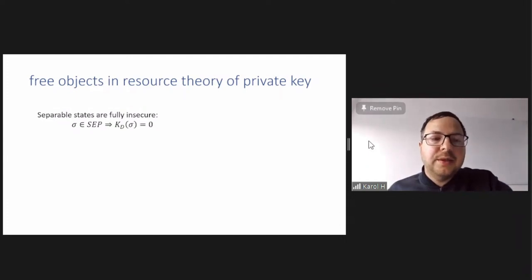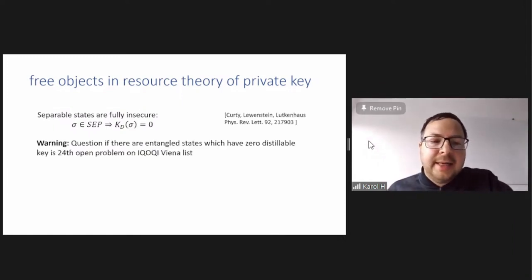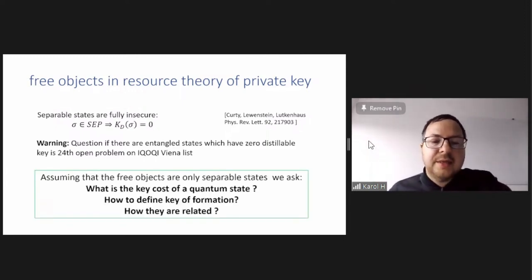So back to this issue that we don't know what are the free objects in the resource theory of private key. So what we surely know is that separable states are fully insecure. So if something is separable, then distillable key is zero. This is resolved by Kurt Liedkernhaus. And there is a warning, namely, the question if there are entangled states which have zero distillable key is a longstanding open problem. You can find it on ICOC-KV-Analyst. So we will not answer this question here. Conversely, we assume that for the moment, which is according to the state of the art, that no entangled states that have zero key exists, so that only free objects are separable states. And assuming that, we will want to ask what is the key cost of quantum state, how to define key of formation, and how they are related.